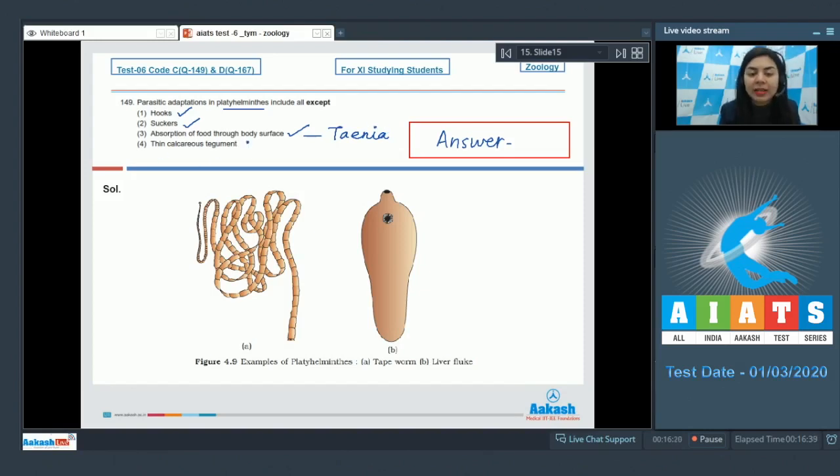Thin calcareous tegument. No, calcareous tegument is not present. They show the presence of, in fact, thick tegument. Tegument, that is the external covering. And their body needs to be covered by a thick tegument. Thus, the thick tegument provides protection against the digestive juices of host. It is not thin and it is not calcareous. That is why this is the incorrect option, hence our answer. The correct answer is option number four.